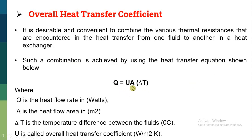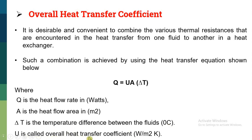The equation is Q = UA∆T, where Q is the rate of heat transfer with units of watts, A is the area of heat flow with units of meter square, ∆T is the temperature difference between the hot fluid temperature and cold fluid temperature with units of degree centigrade, and U is known as the overall heat transfer coefficient with units of watts per meter square Kelvin.